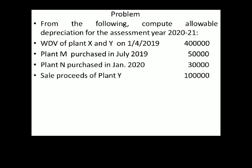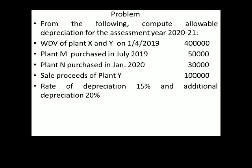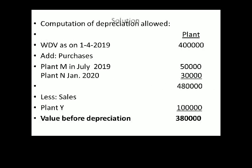Sale proceeds of plant Y is 1 lakh. We had plants X and Y at the beginning, and plant Y was sold for one lakh. The rate of depreciation is 15% — that is the normal rate — and the additional depreciation is 20%. Now let us go to the solution: computation of depreciation allowed.